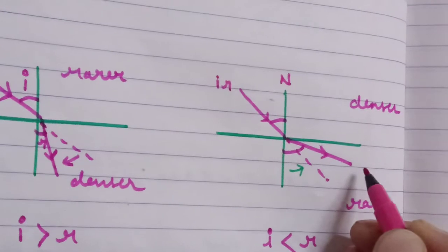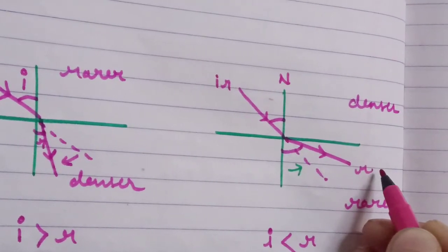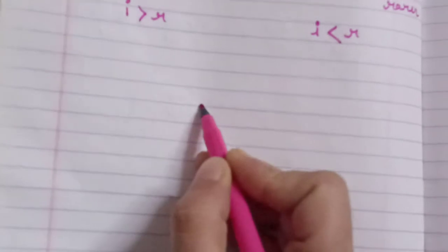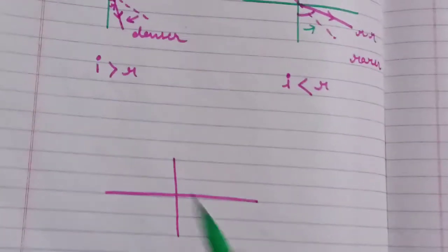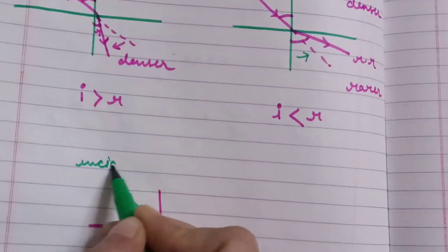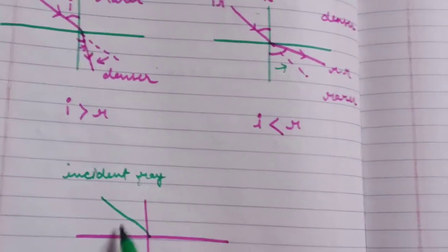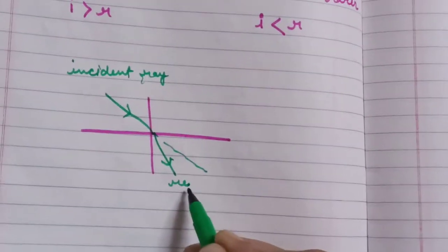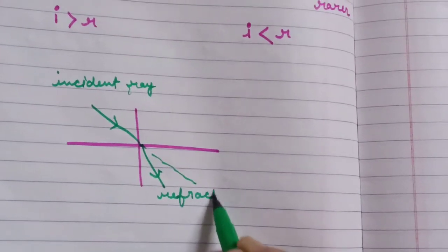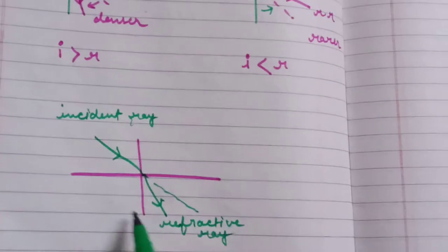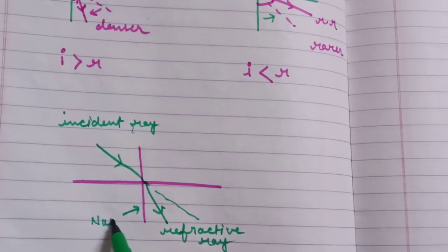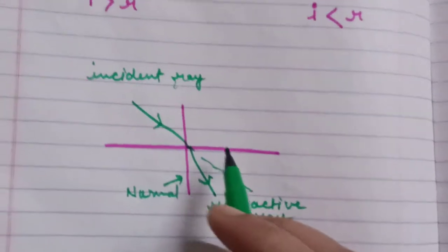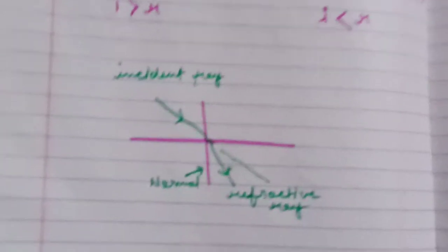This normal, this incident ray, and the refracted ray are in the same plane. These three are in the same plane. During refraction, speed of light and wavelength are changed.